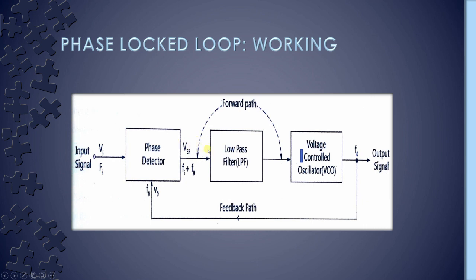This DC voltage is then passed through the low pass filter. We know that the low pass filter removes very high frequency noise, so at the output of the low pass filter we get a steady DC level output. This steady DC level is then passed through the voltage controlled oscillator.